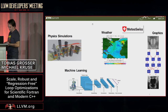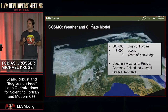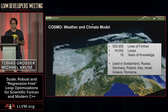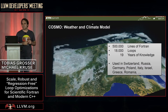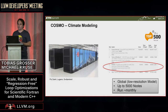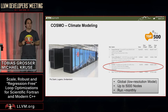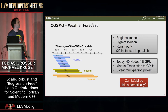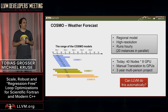One of the applications I work with is the Cosmo weather and climate model, which has around half a million lines of Fortran code, around 18,000 loops, and 19 years of weather forecast knowledge hard-coded in this Fortran codebase. It's used across Europe. There are two use cases: climate modeling, where every couple of months researchers run this on large HPC clusters, and the daily weather forecast in Switzerland.